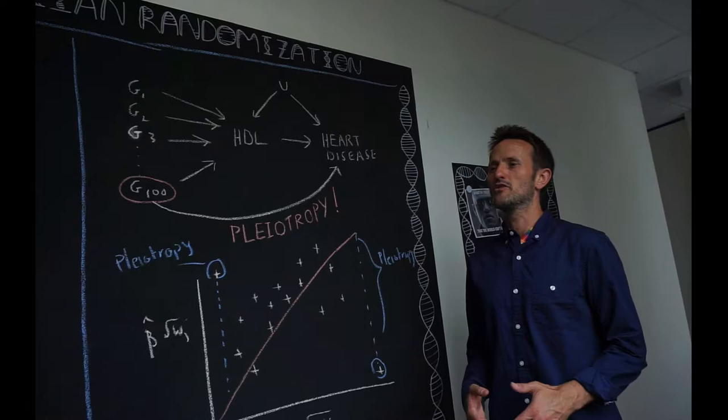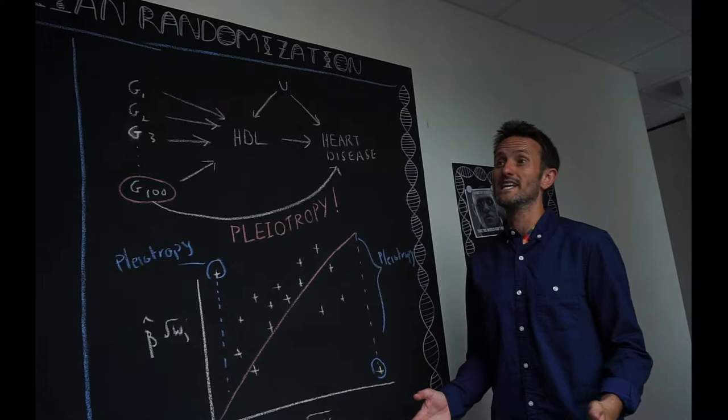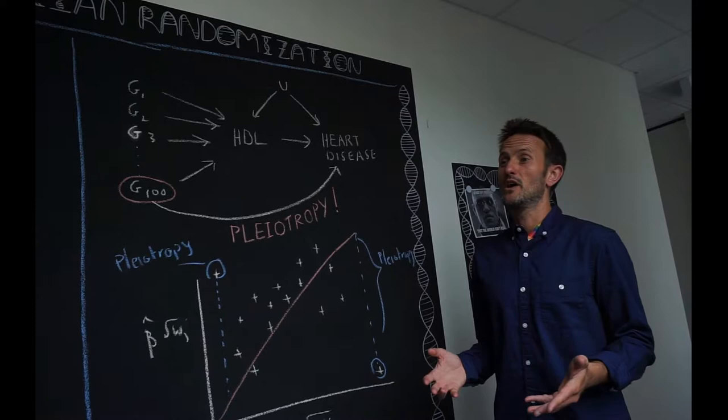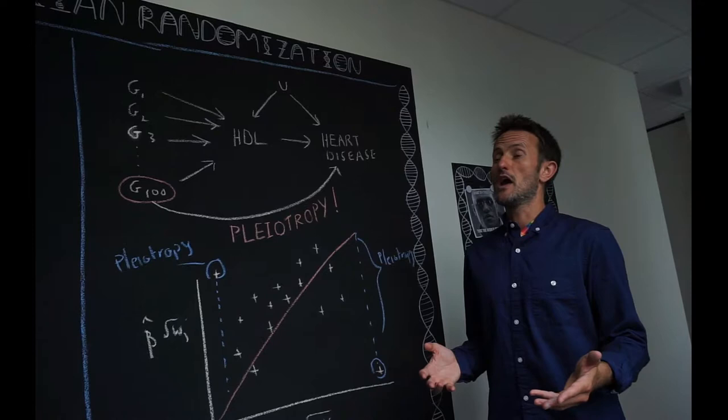So in the past, when people did Mendelian randomisation studies, we typically did it with just one gene. One gene which we knew was influencing a particular risk factor, like HDL cholesterol. But now it's possible to do Mendelian randomisation analyses with hundreds of genetic variants because of the increasing availability of these big datasets.